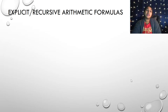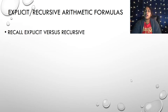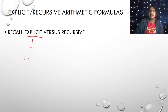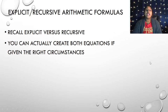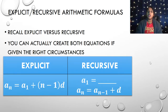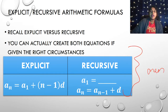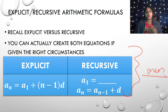Let's move to our second example. We need to identify explicit versus recursive. With an explicit formula, I can find any N value. With a recursive formula, I need the previous term. We can actually create both equations given the right circumstances, and both formulas involve A1, the first term, and D, the common difference.